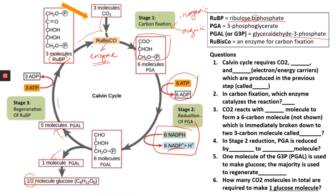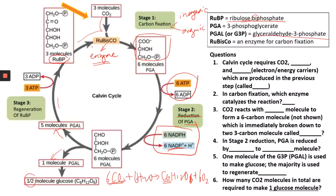Why is only half a molecule shown going to glucose? Because the overall equation requires six carbon dioxide and six water to produce one molecule of glucose. Each CO2 has only one carbon, and glucose has six carbons, so you need six CO2 total. If you put in three molecules of CO2, you get half a glucose molecule. To make one full glucose, you double the amount — six carbon dioxide molecules are required.